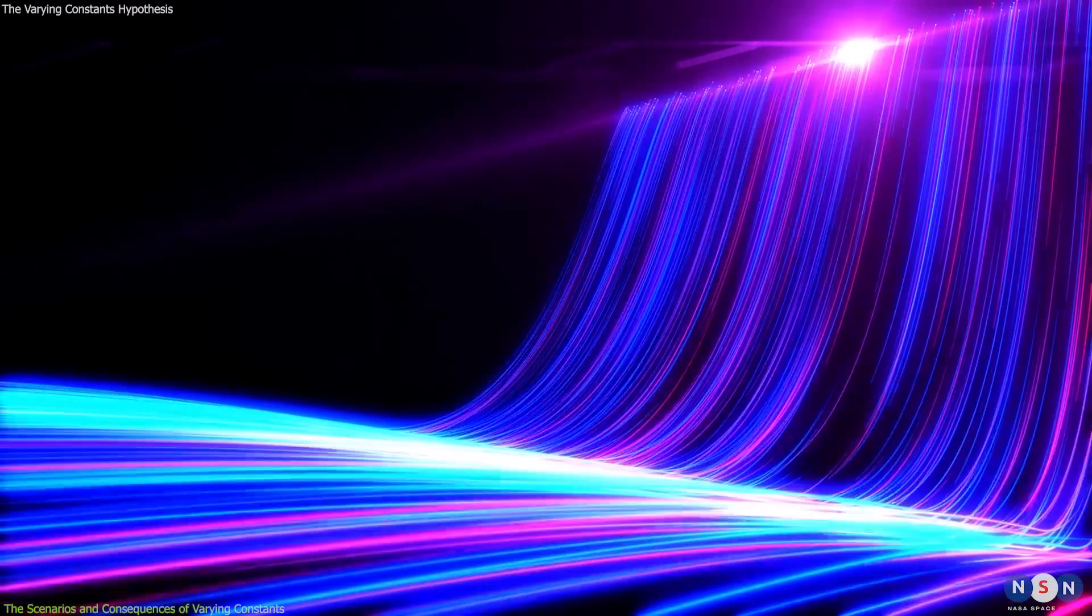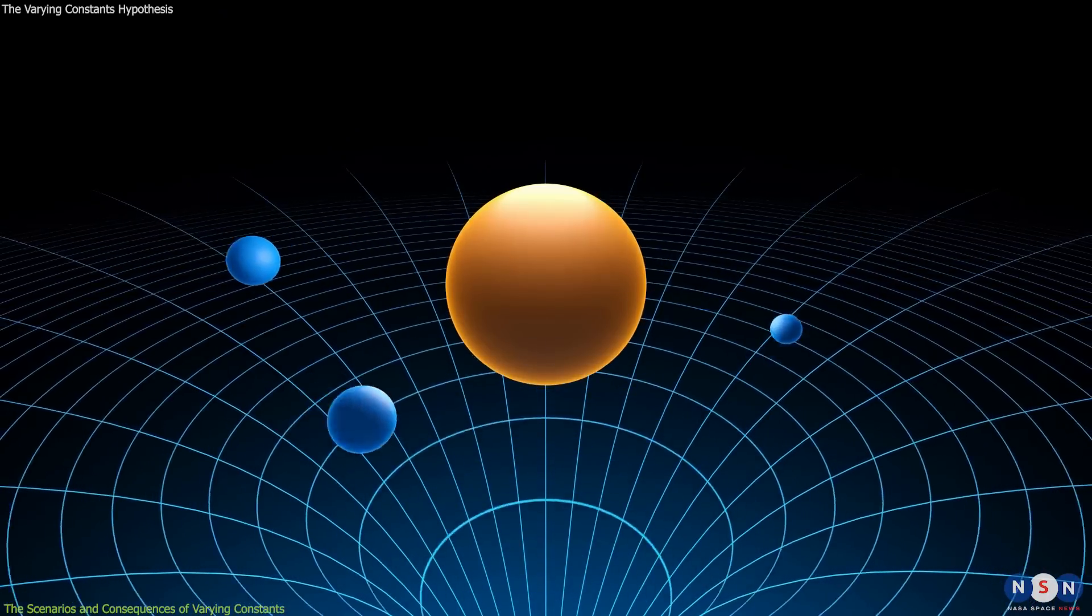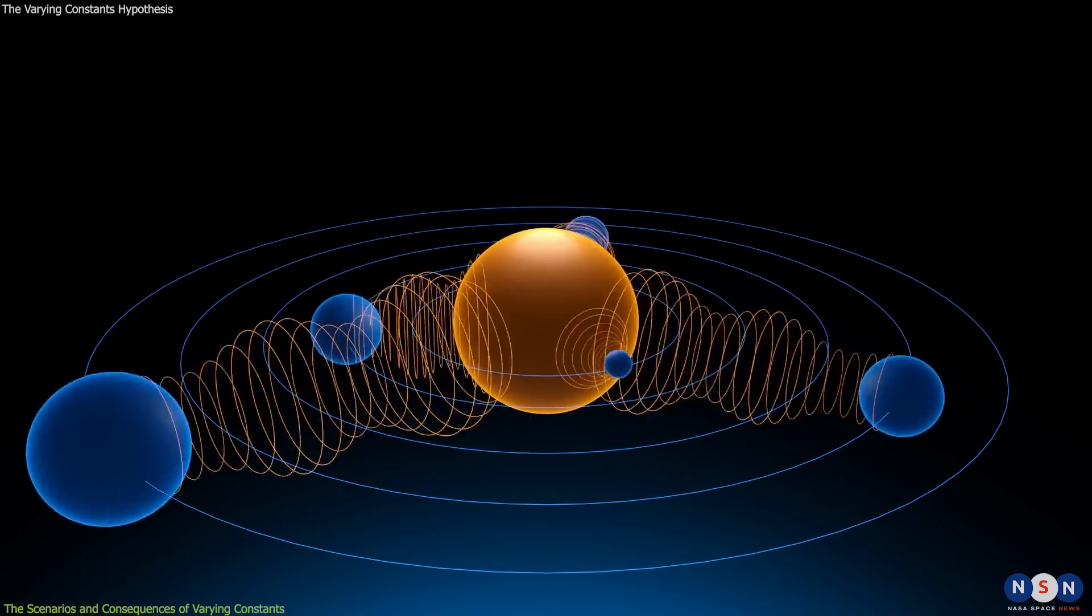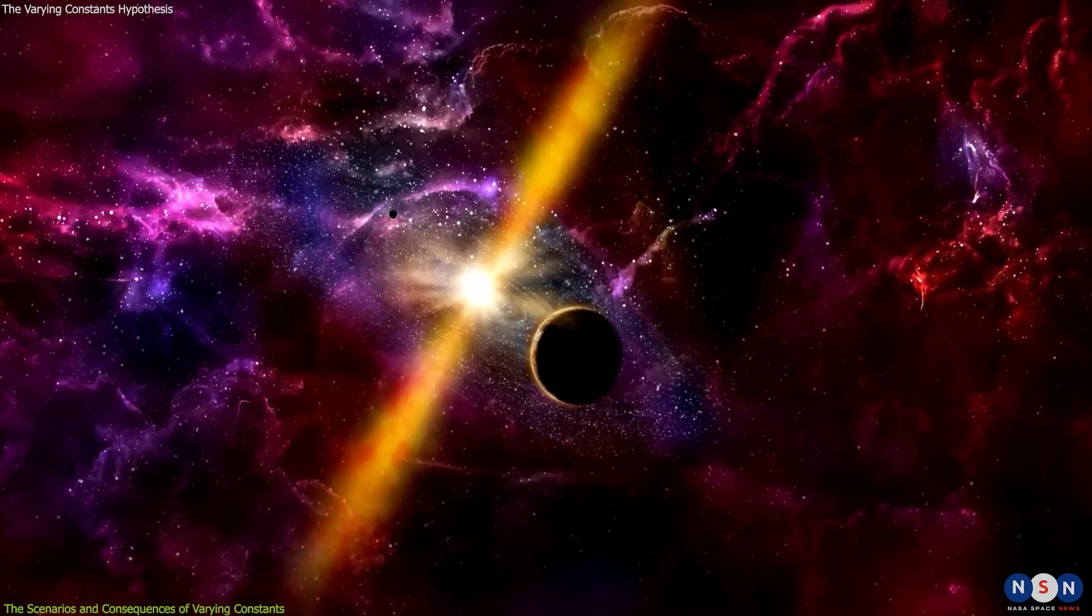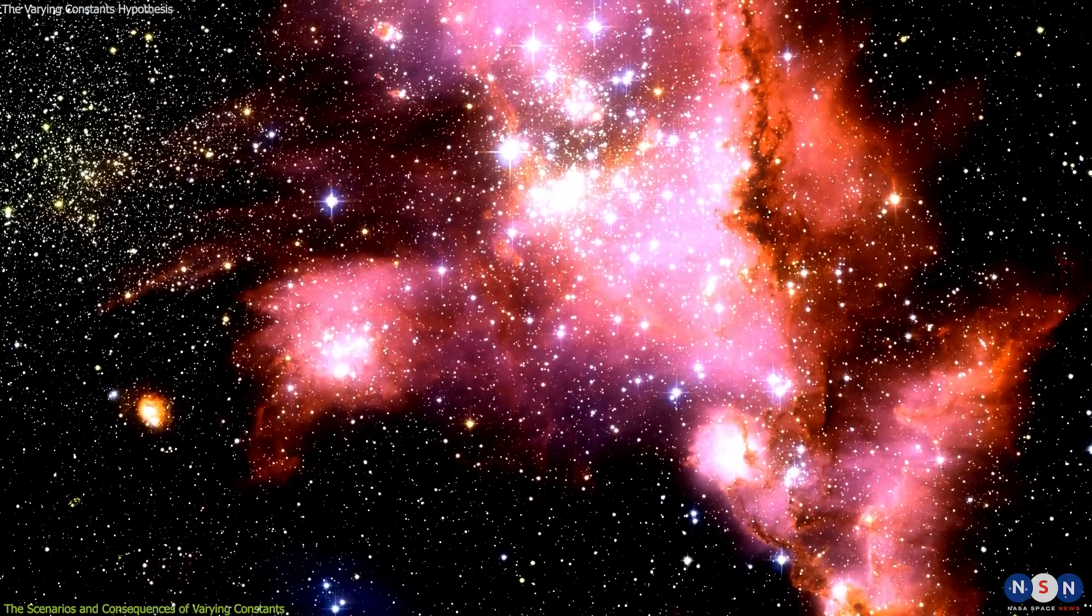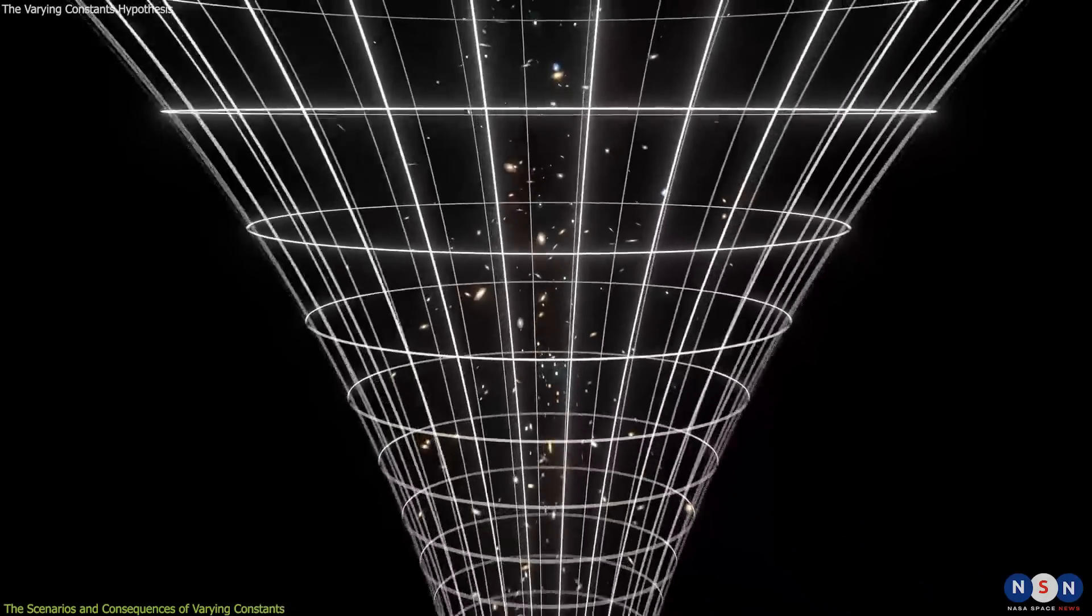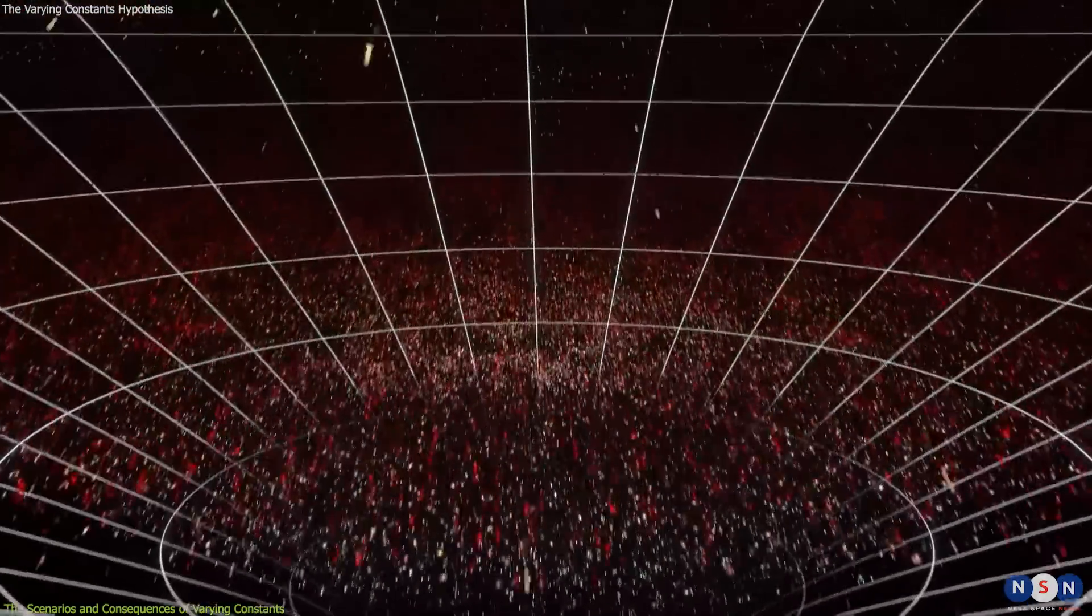Another example is the gravitational constant. If the gravitational constant varies over time or space, then the force of gravity between two masses would change accordingly. This would affect the orbits and motions of planets, stars, and galaxies, as well as their shapes and structures. The gravitational constant also determines the rate of expansion and contraction of the universe, as well as its curvature and geometry. If the gravitational constant varies, then the history and fate of the universe will be different from what we currently assume.